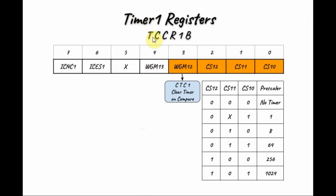The Timer 1 register TCCR1B is used to store the prescaler value by programming the clock select bits. Based on the truth table, we either have no timer or the prescaler value is 1, 8, 64, 256, or 1024. The wave generation mode bit is responsible for clear timer on compare (CTC), so this bit must be set to 1 whenever we use the compare match interrupt. The other bits are not used in this video and are assumed don't care.